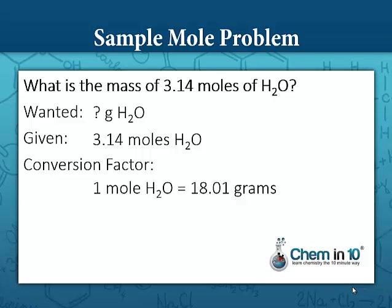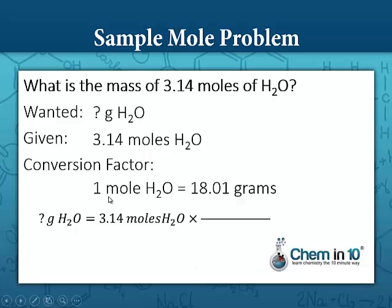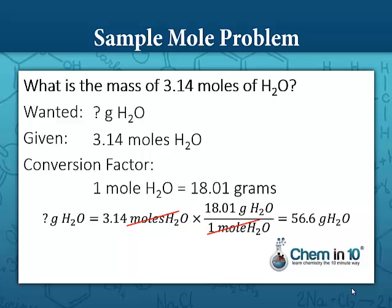Now we can set up our problem, starting with question mark wanted. How many grams of water equals the given 3.14 moles of water? We set up our conversion factor so that moles of water cancel out. One mole of water goes in the denominator, canceling the units moles of water in the numerator, and one mole of water equals 18.01 grams. We multiply the numerators and divide by the denominator, which is 1, and we get 56.6 grams of water — in the 3 significant figures we started with. So 3.14 moles of water is 3.14 times 18.01, or 56.6 grams of water.